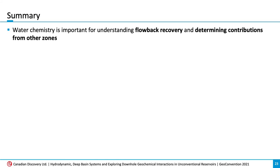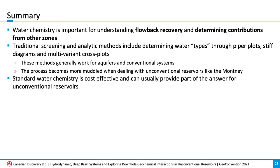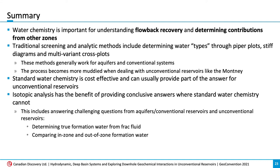In summary, water chemistry is important for understanding flowback recovery and determining contributions from other zones. Traditional screening and analytic methods include determining water types through things like Piper plots, stiff diagrams, and multivariant cross plots. These methods generally work well for aquifers and conventional systems, but the process becomes more muddied when dealing with unconventional reservoirs like the Motney. Standard water chemistry is cost effective and can usually provide part of the answer, but in order to delve deeper and provide more conclusive answers, isotopic analysis is needed. This includes determining true formation waters from the frac fluid and comparing in-zone and out-of-zone formation water, which is important so operators can adjust their operations and ensure frac fluid and subsequent downhole interactions are not impeding production due to things like scaling.